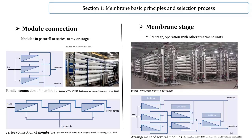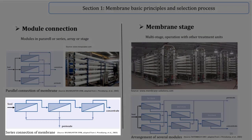Module Connection. Modules are connected in series or parallel. A series connection is used if the permeated yield from one module is not sufficient. Several modules are connected in series so that, according to the figure, the concentrate flow of a module serves as feed for the next module, and the permeate of the single modules is brought together.